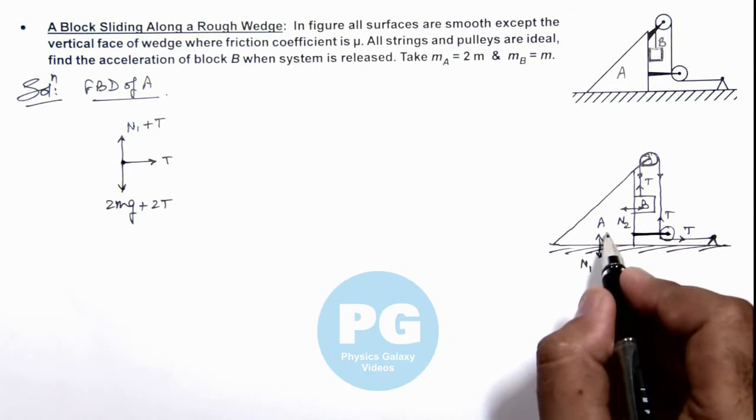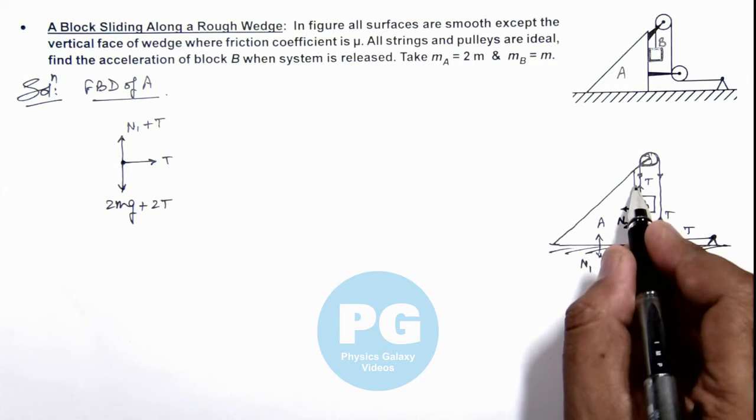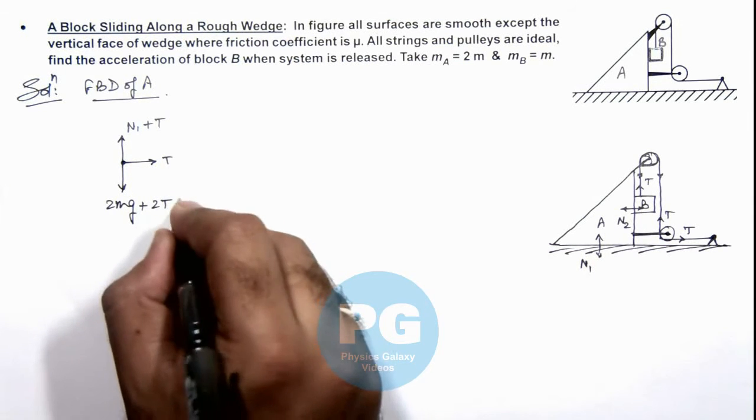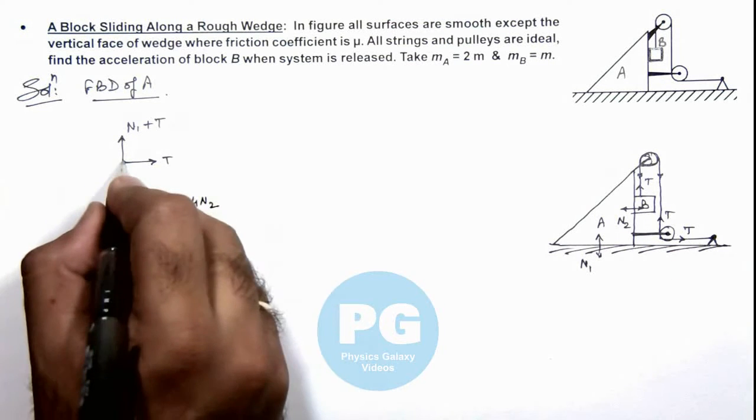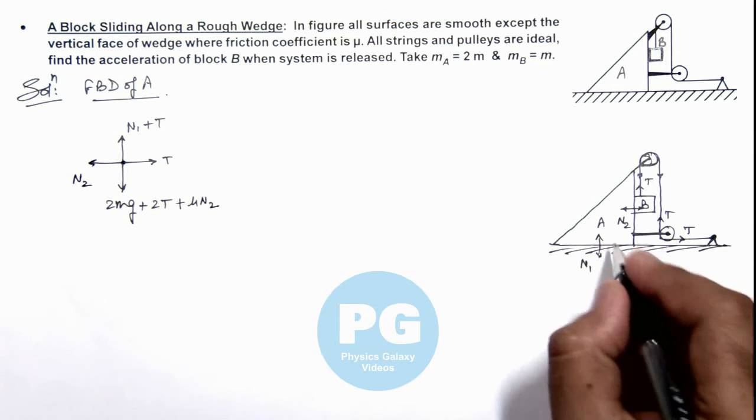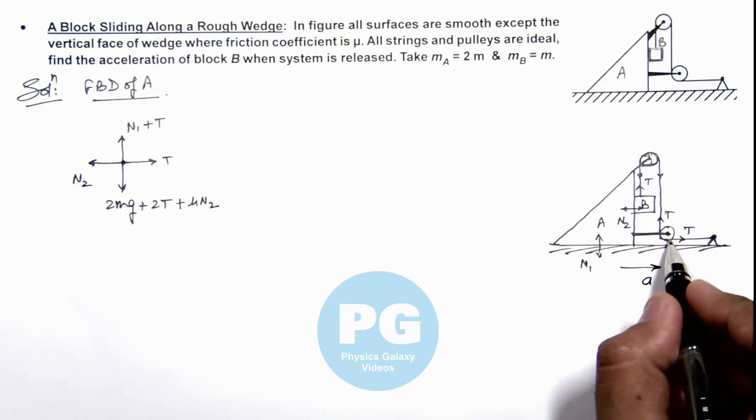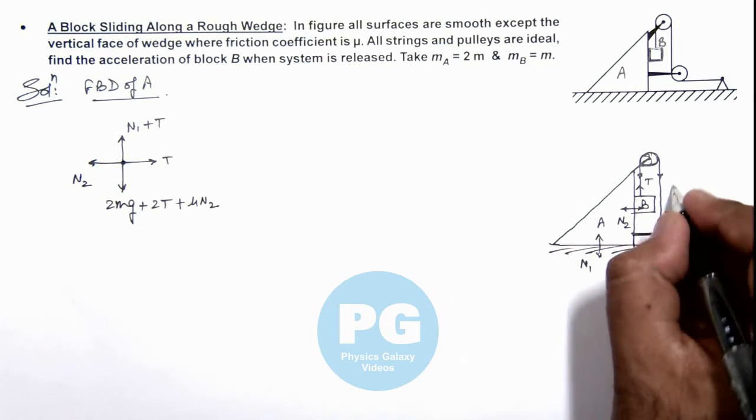Now as the block is having a tendency to move toward right, block B will come down, and B will experience friction in upward direction. Due to which block A will experience friction in downward direction, which will be μN₂. And the normal reaction N₂ will be acting on this block in this direction. If we consider A is moving toward right with acceleration a, so the length by which this string will shorten, the same distance B will fall down, so it will also go down with the same acceleration a.